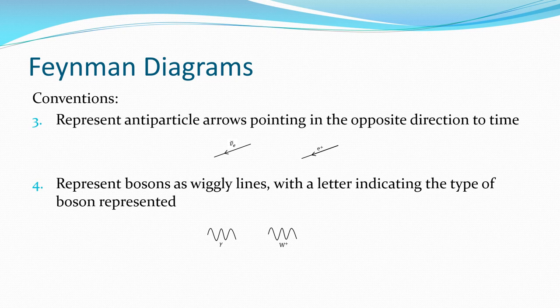Number three, if it's an anti-particle, we show its arrow as pointing backwards in time. It doesn't necessarily mean that we think that anti-particles are traveling backwards through time. It's just how we're showing it. So there's an anti-electron neutrino and a positron shown with their arrows pointing to the left, meaning they go backwards in time.